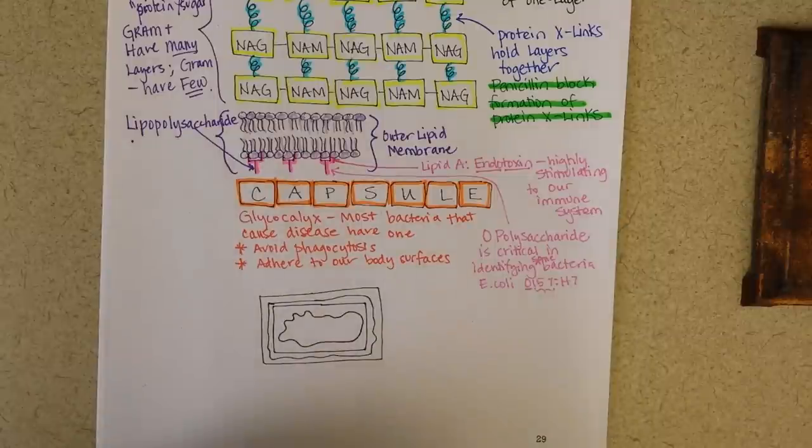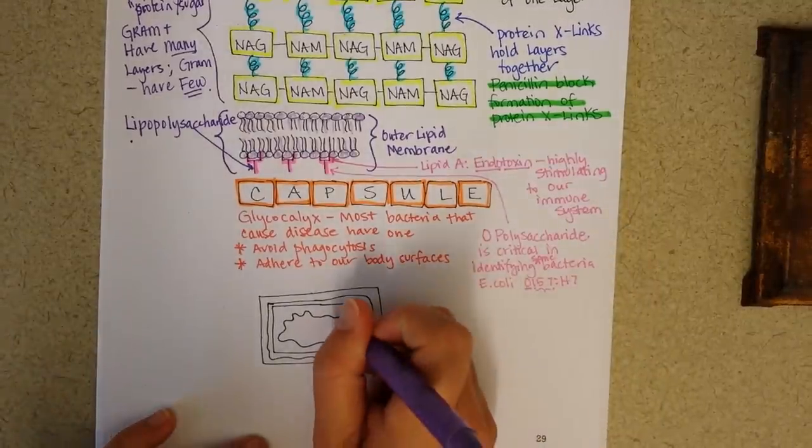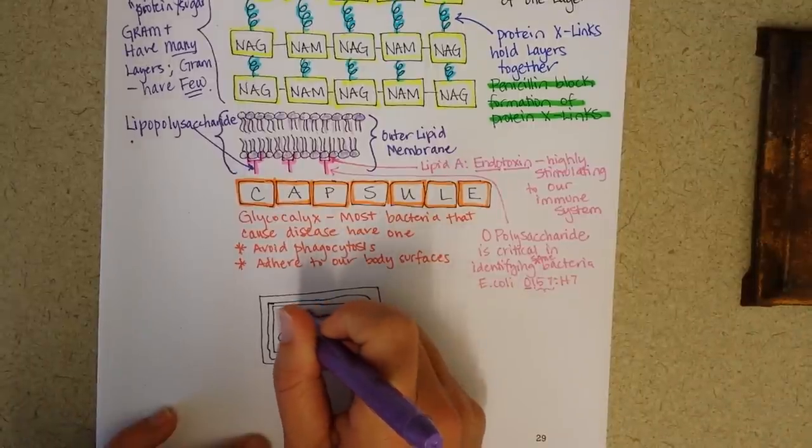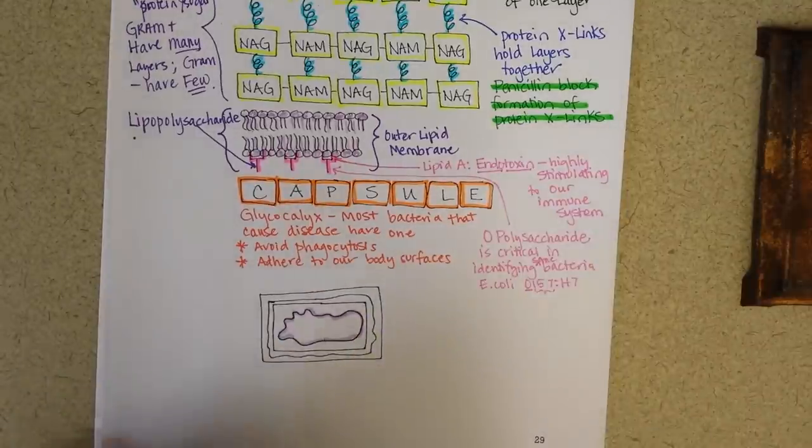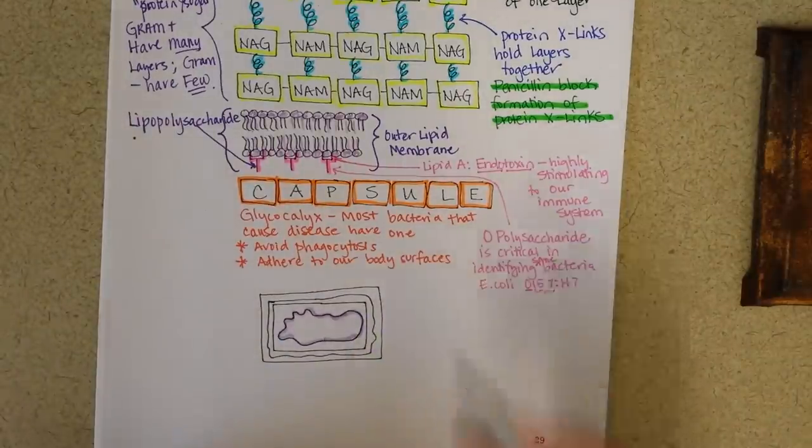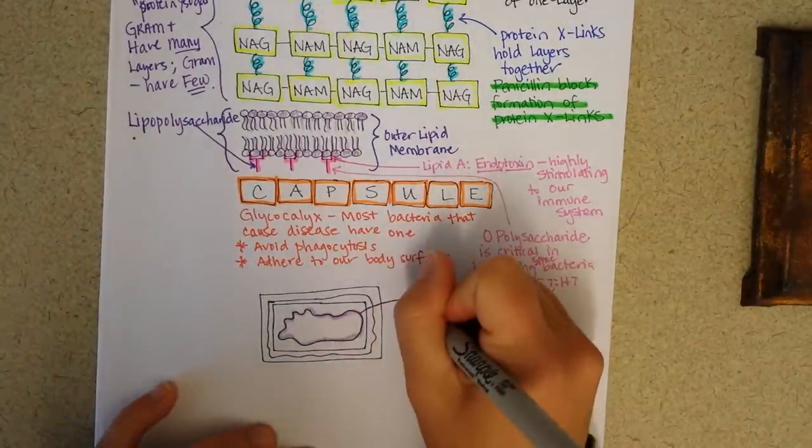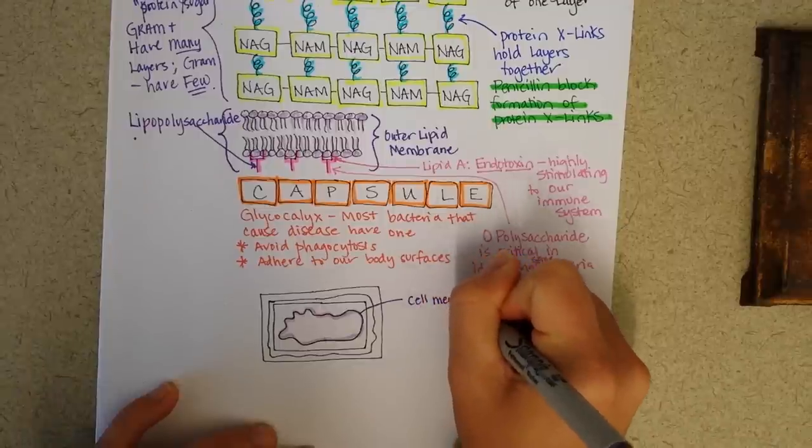The cell membrane was the first thing that we looked at in the very inner part. I'm making it wiggly on purpose just to remind you that it's made of lipids, not because it necessarily would be that wiggly in a real bacterial cell. So we've got the cell membrane.